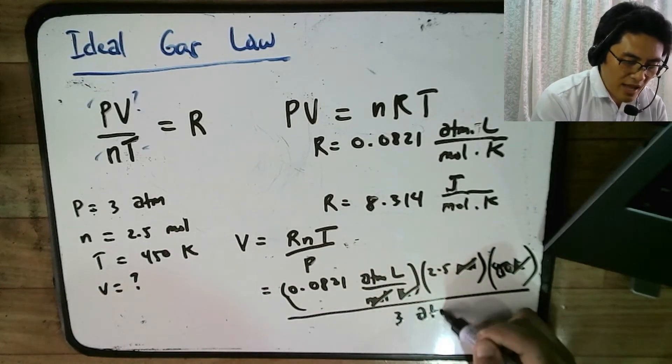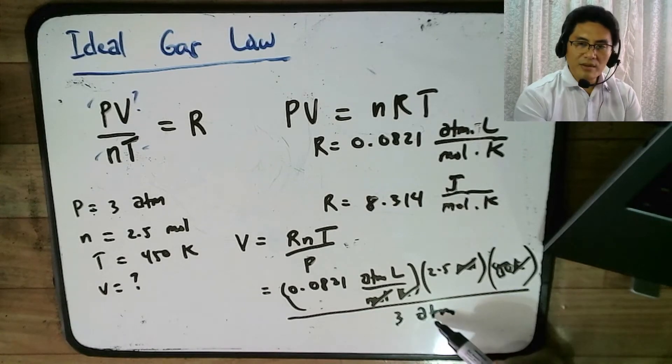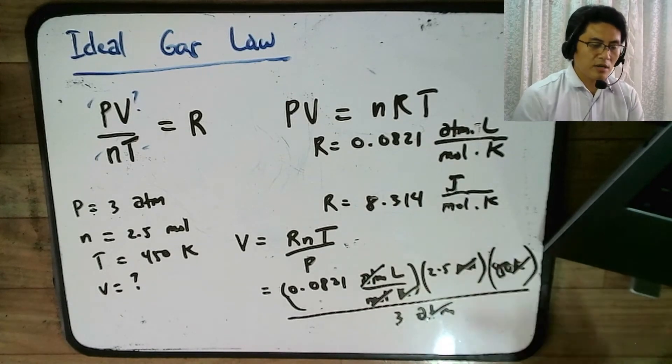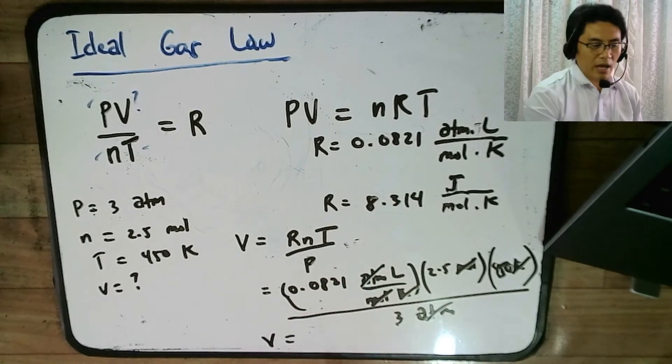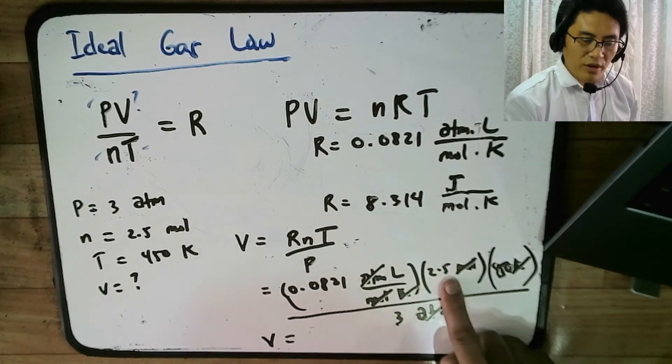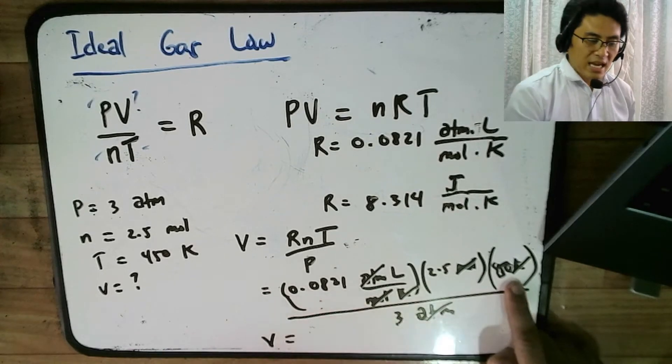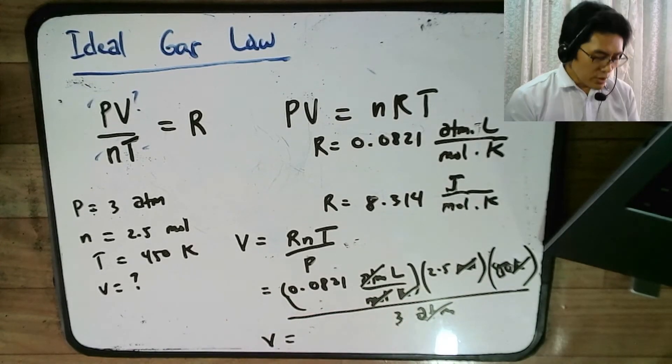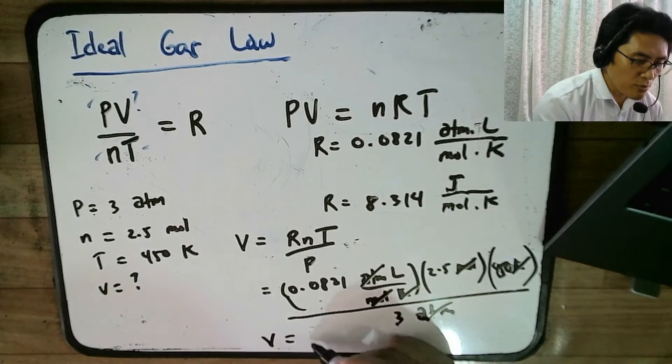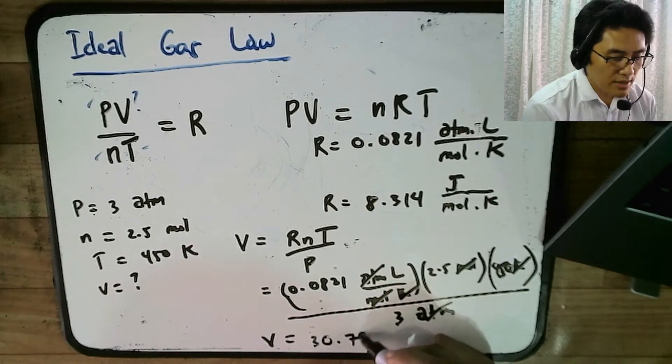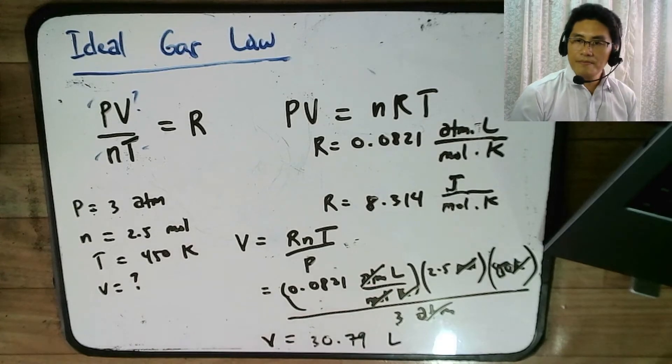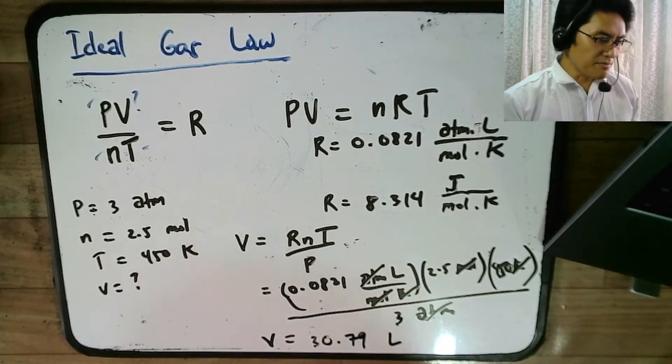And then just like that, notice the ATM here also cancels with the ATM here. Just like that, you will get your answer. So if you just multiply 0.0821 times 2.5 times 450, and then divide it by 3, you will get the answer for the volume, which is approximately around 30.79 liters.